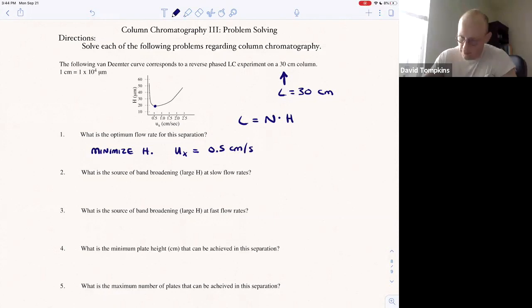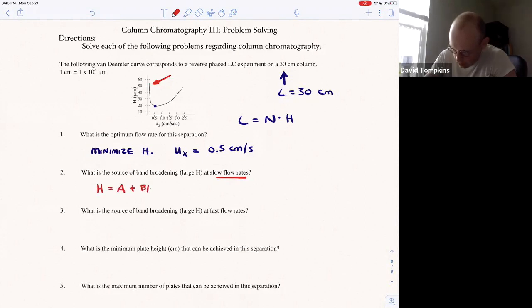So at slow flow rates, the plate height can be quite large and that's due to, of course, the B term. So recall the Van Deemter equation is the sum of these three terms: A, B, and C.